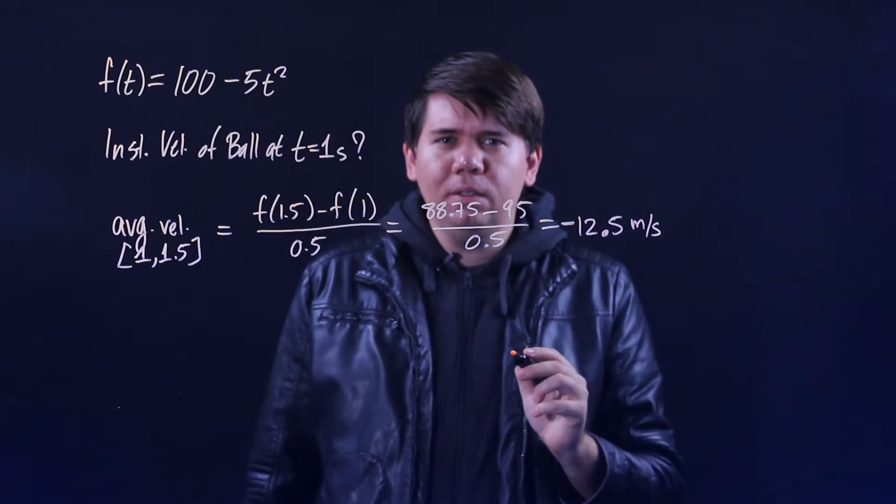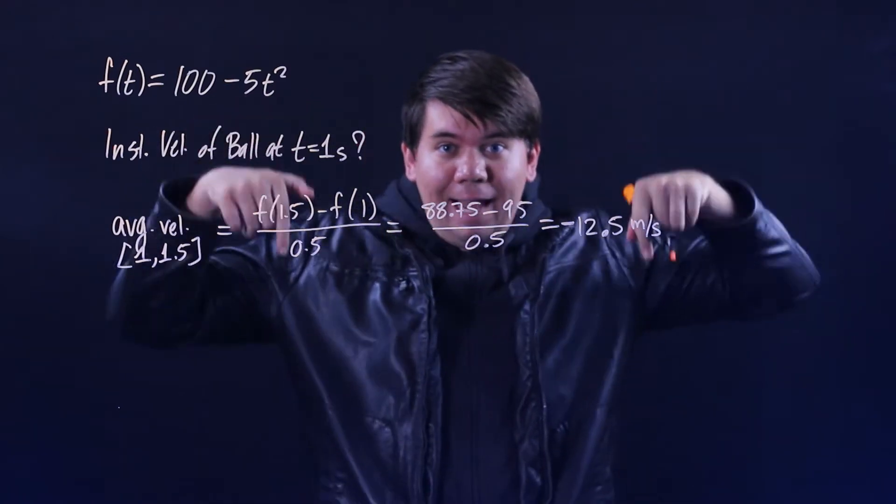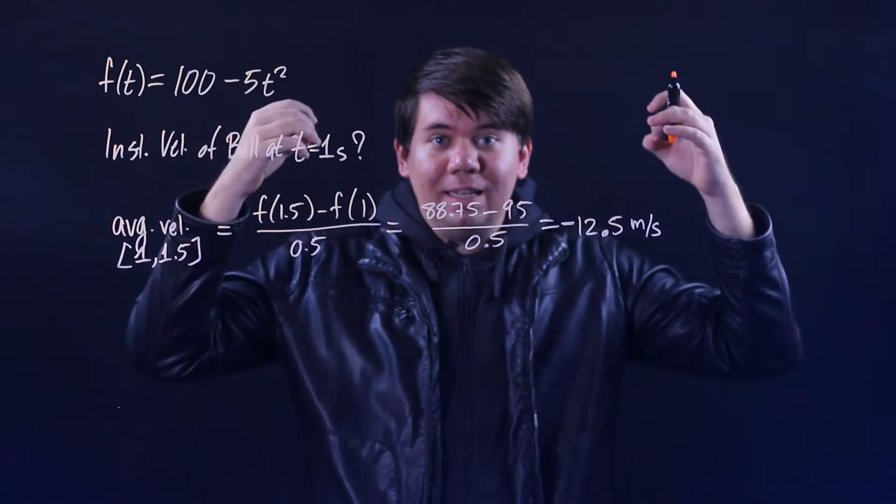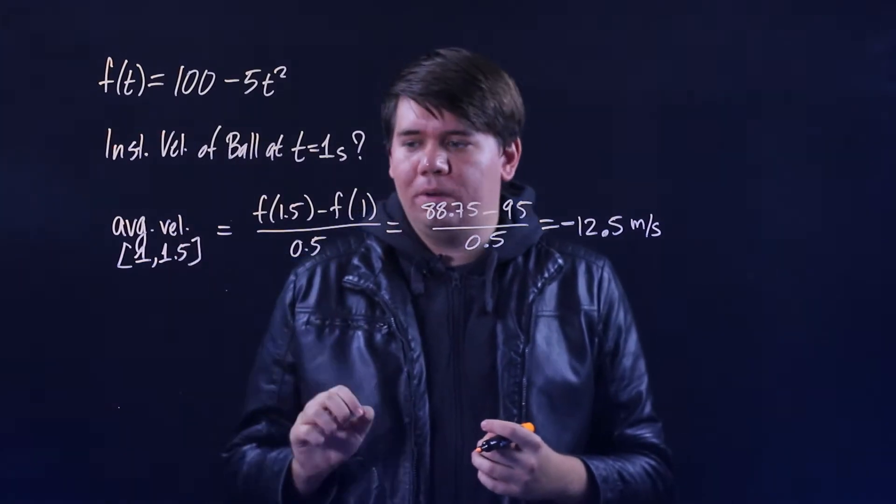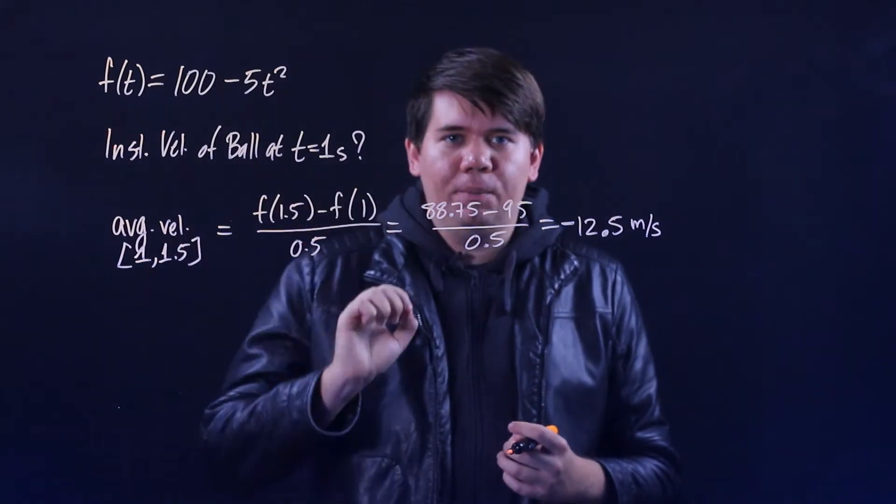What does that negative mean? Well the ball is falling, so its velocity is downward. The negative is cuing us into the fact that the ball is moving in the downward direction. But again, this is the average velocity from one to 1.5, so it's not quite telling us what's going on at time one.